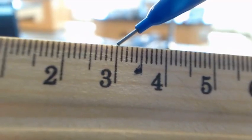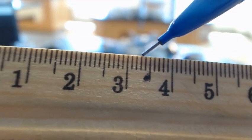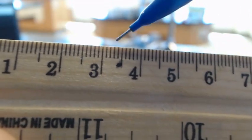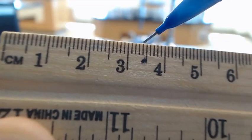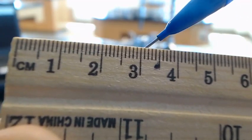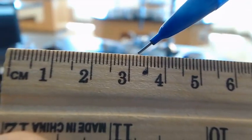So pretty much my ruler goes by 0.1 centimeters. So if I measure something, I know for a fact if something is over 3.1 or over 3.2 centimeters. Okay. So what I'm going to do is measure a post-it note.